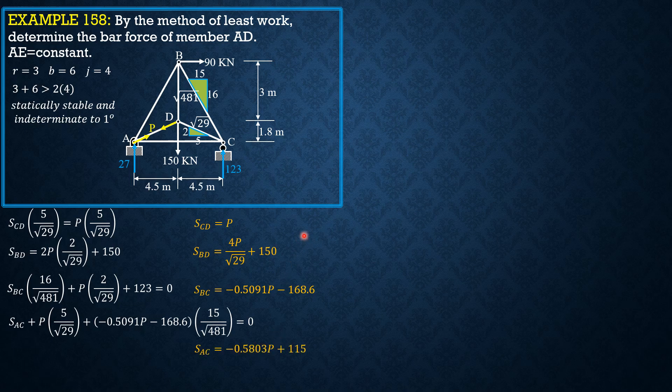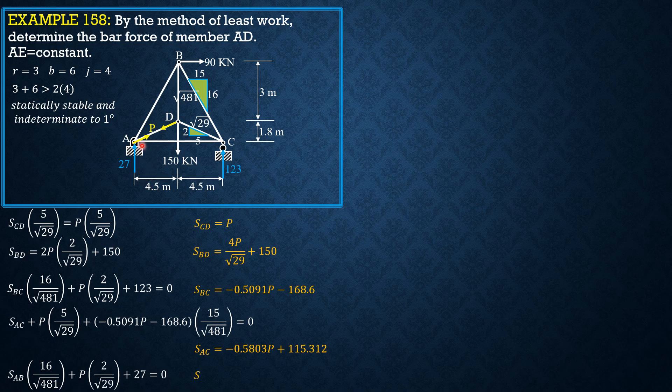Finally at A, summation forces vertical. Sab times 16 over square root of 481 plus P times 2 over square root of 29 plus 27 equals 0. So Sab is equal to negative 0.5091P minus 37.010.